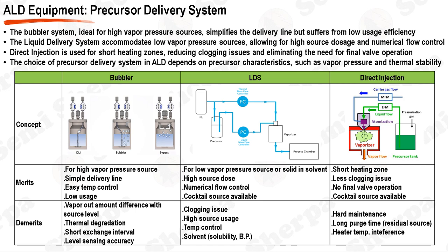Atomic layer deposition, ALD, precursor delivery systems play a critical role in defining the success of the deposition process. The type of precursor delivery system used often depends on the characteristics of the precursor, such as its vapor pressure and thermal stability. The bubbler system is commonly employed for precursors with high vapor pressure. The simplicity of the delivery line and the ease of temperature control are key advantages of this system. However, its effectiveness is limited by the vapor output difference with source level, and it can potentially induce thermal degradation of the precursor, with a low usage efficiency and challenges in level sensing accuracy.